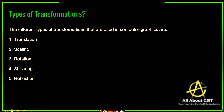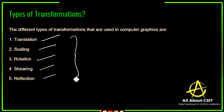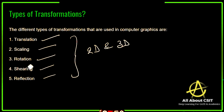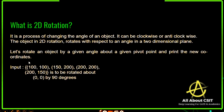The different types of transformations are translation, scaling, rotation, shearing, and reflection. All these techniques can be applied on 2D plane or 2D objects as well as 3D objects. In this video, we will learn about what exactly 2D rotation is.